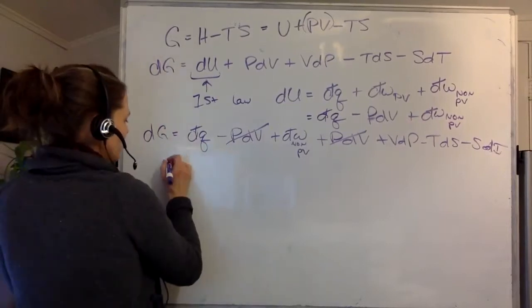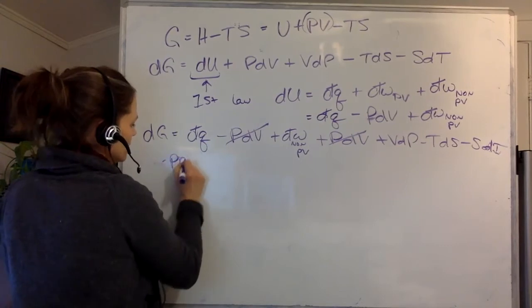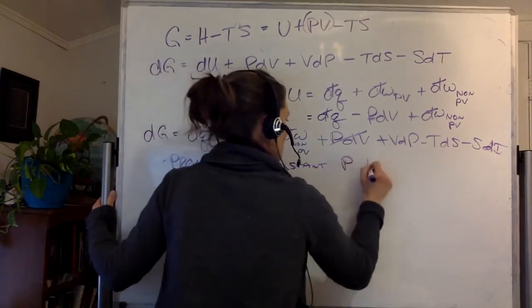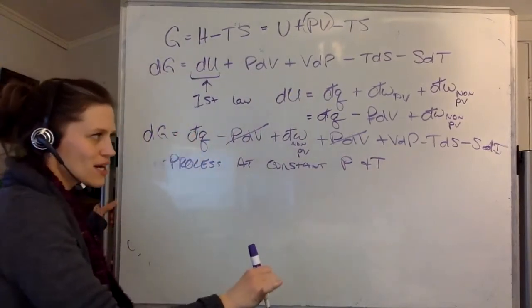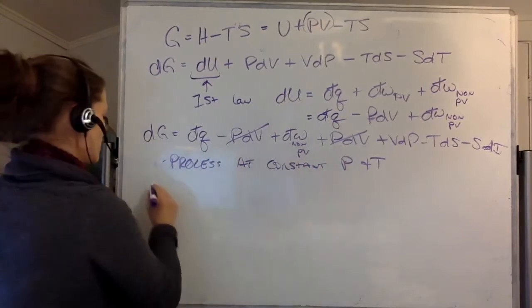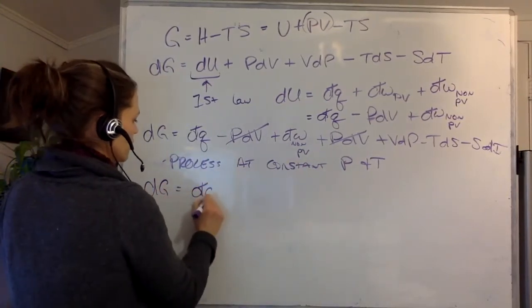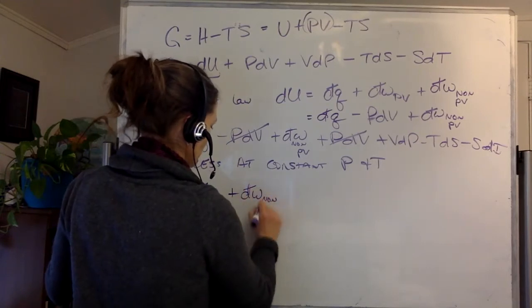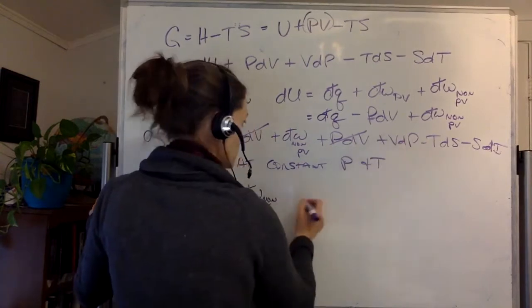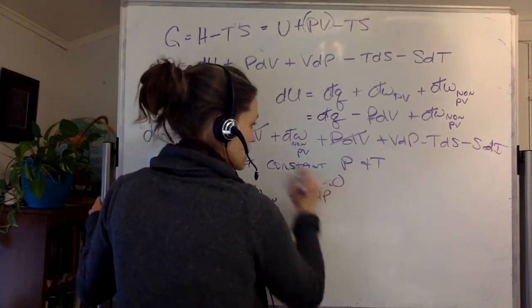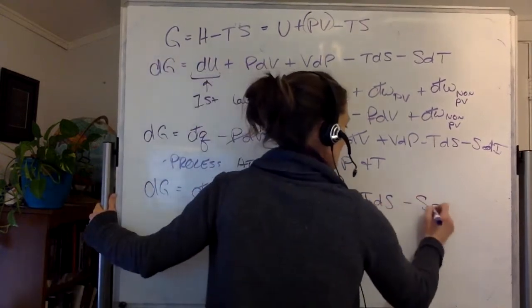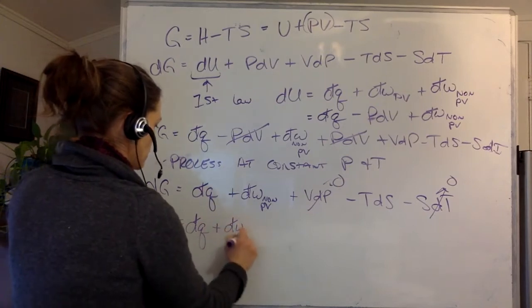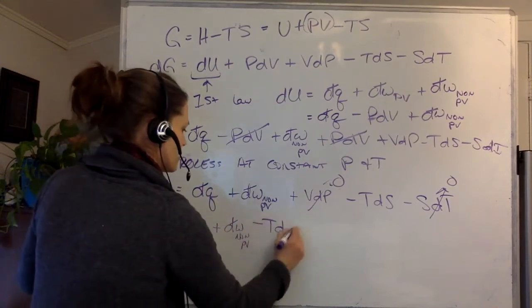So now what I'm going to do is I'm going to state that my system, or my process, is at constant pressure and temperature. So if delta P is not changing and delta T is zero, then this simplifies into dQ plus dW non-PV work, plus VdP that goes to zero, minus TdS minus SdT that also goes to zero, such that I'm left with dQ plus dW non-pressure volume minus TdS.